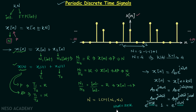Rearranging, we get 2π/ω₀ = N/k. Since N is an integer and k is an integer, N/k is a rational number. Therefore, the condition for a discrete time complex exponential or sinusoidal signal to be periodic is that 2π/ω₀ must be a rational number. In the next lecture we will solve problems based on the concepts developed here.